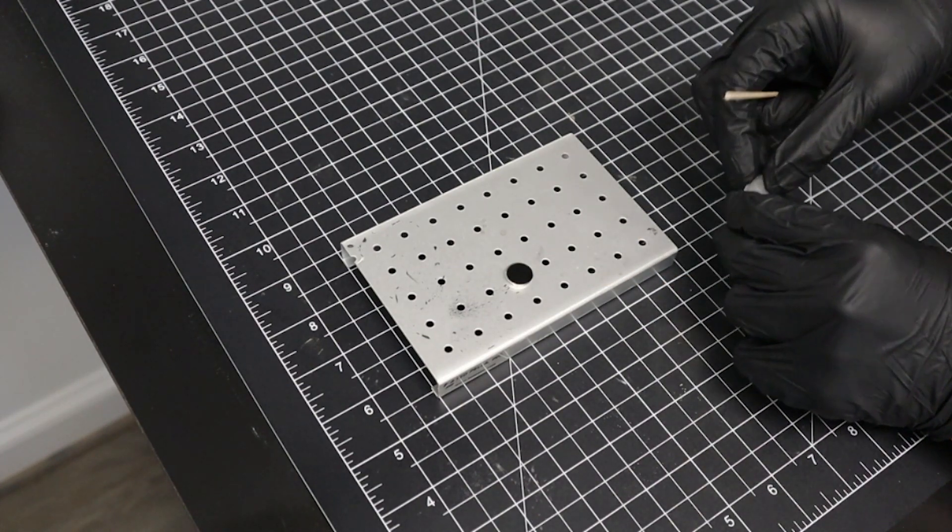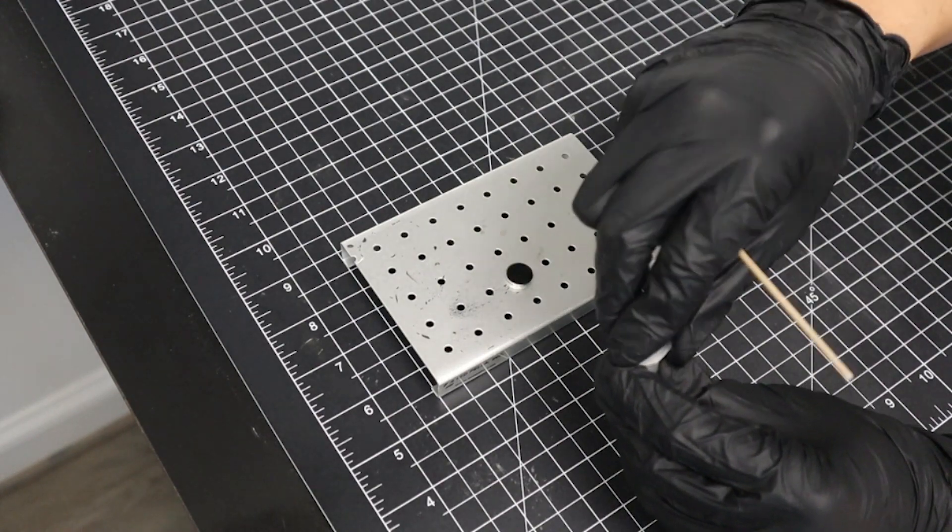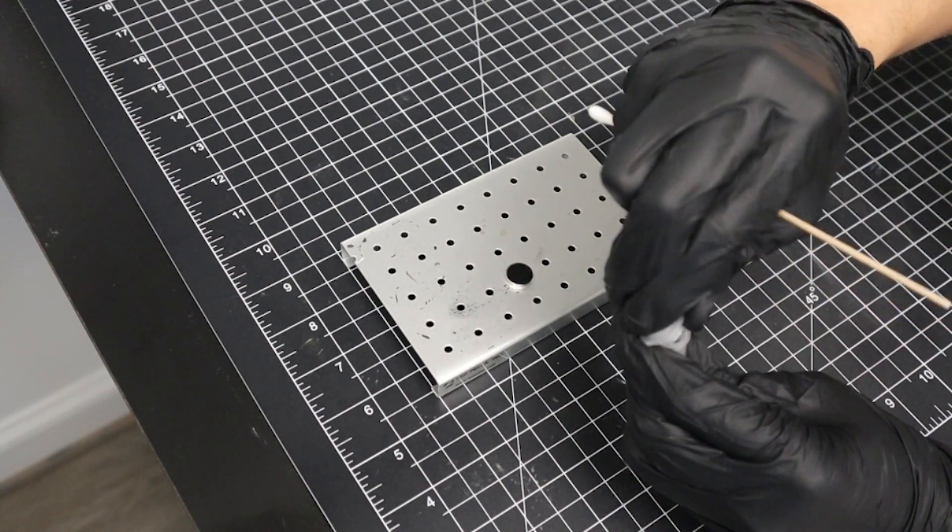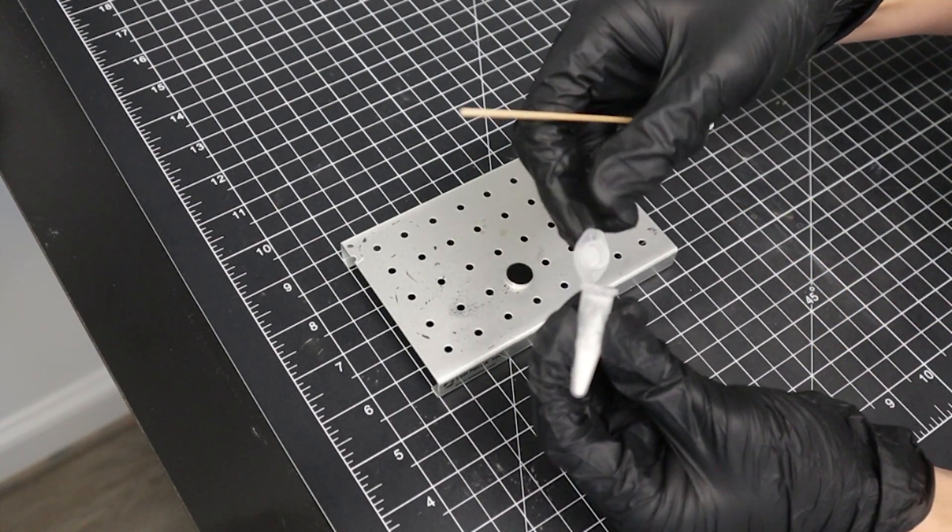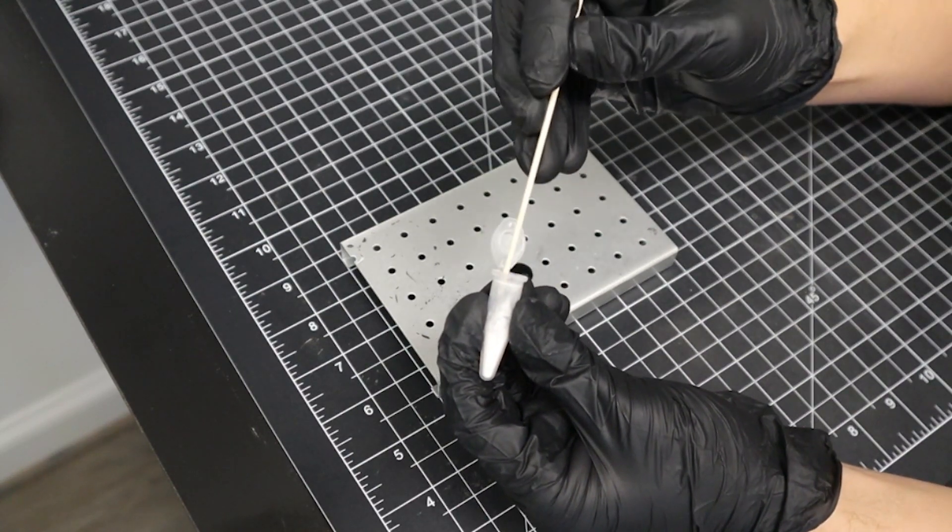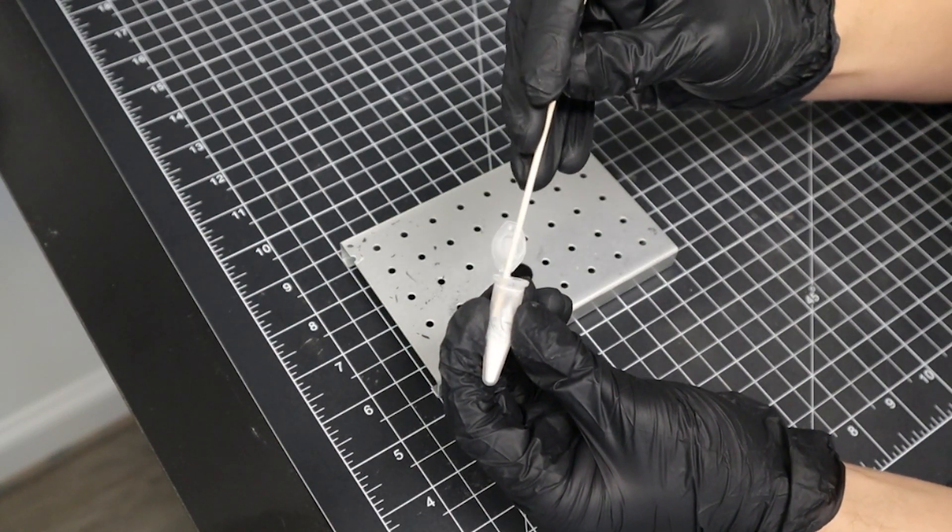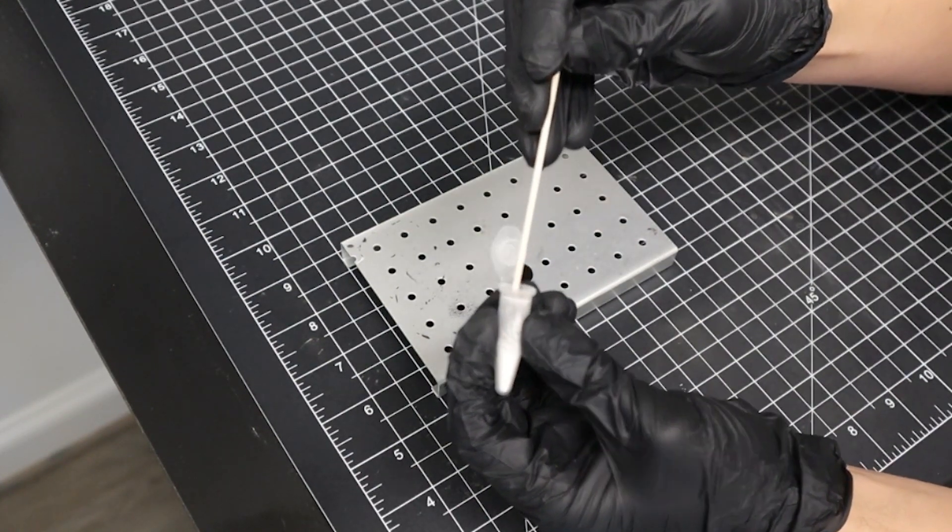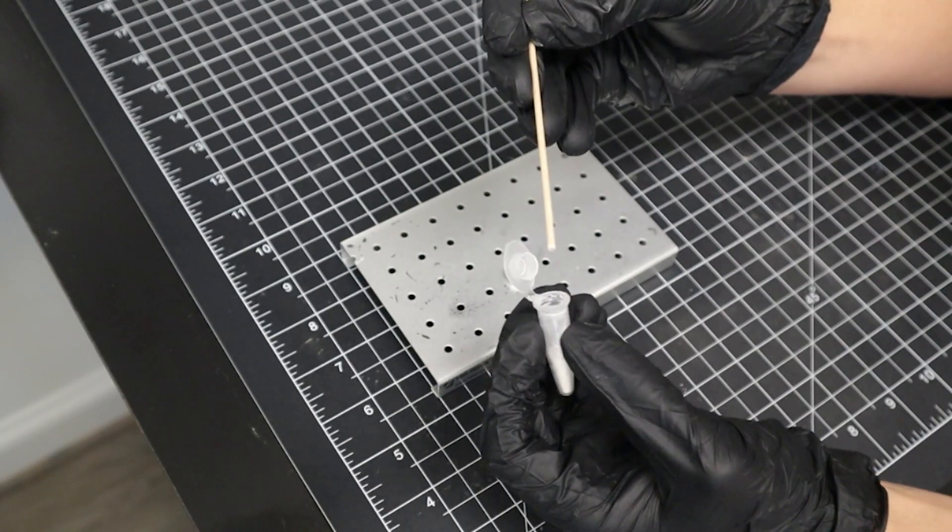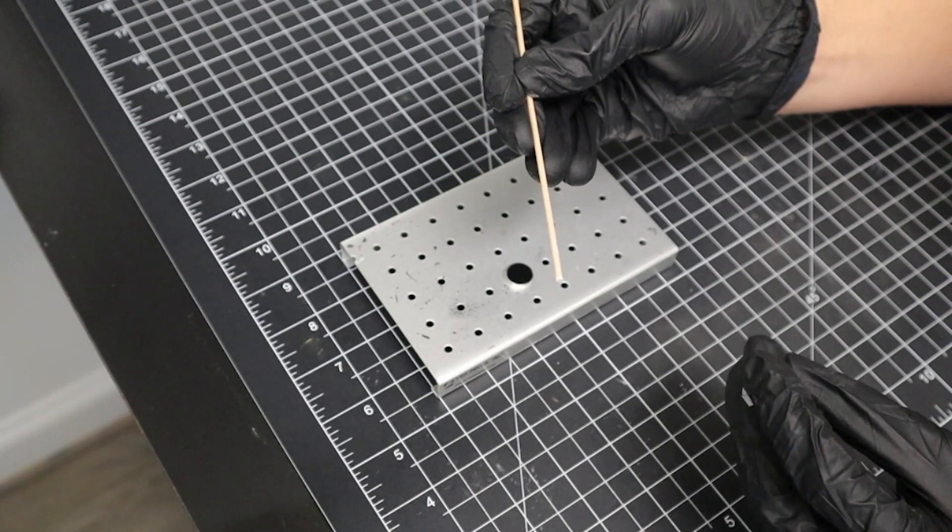We start by inserting the wooden end of our cotton swab into our powder sample. The particles will attach themselves to the wood, allowing us to easily transport a small volume of powder to our sample stub.